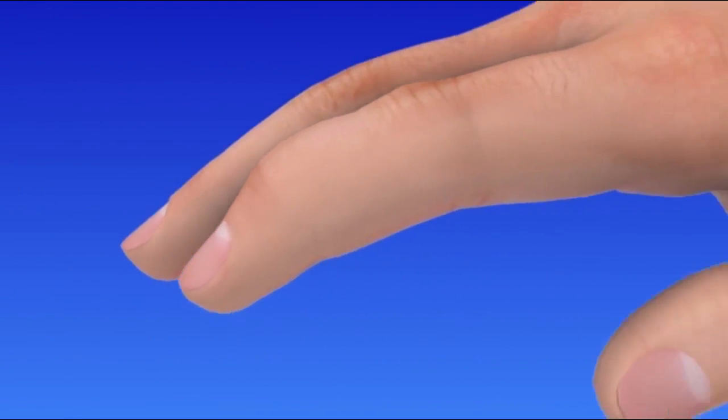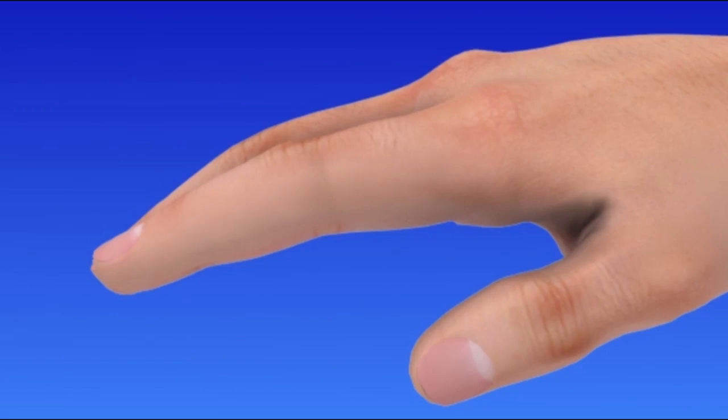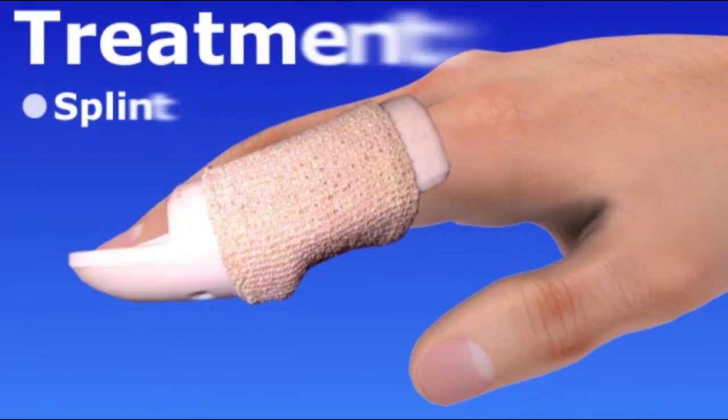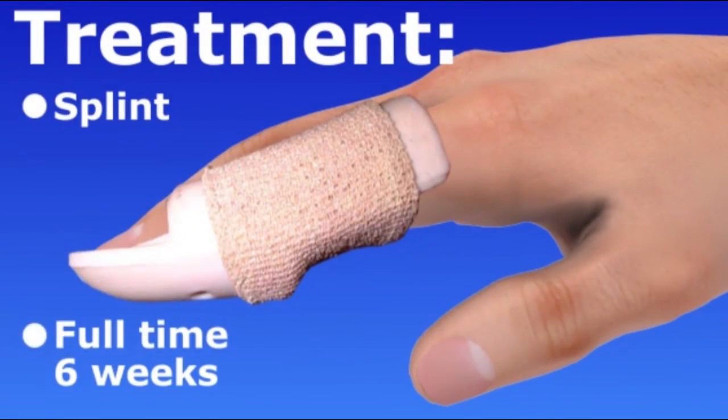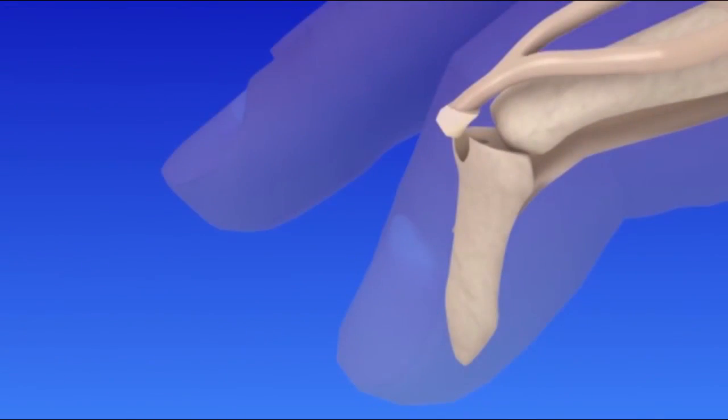The vast majority of mallet finger injuries are treated with splinting. The finger splint is worn full-time for at least six weeks. The splint holds your finger in proper position while the tendon heals.